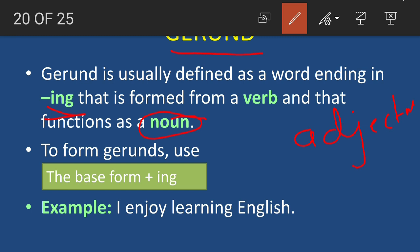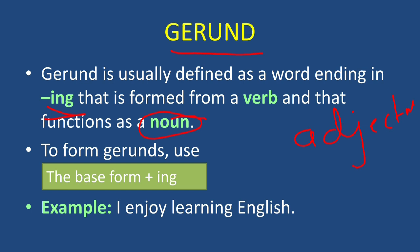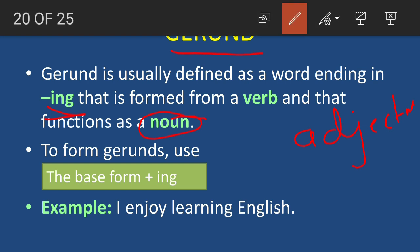When the -ing form of a verb acts as a noun in the sentence, it is called a gerund. We form gerunds the same way we form participles: base form of verb plus -ing. For example: walk + ing = walking, talk + ing = talking, learn + ing = learning. The formation of present participle and gerund is the same — the only difference is present participle acts as an adjective while gerund acts as a noun.